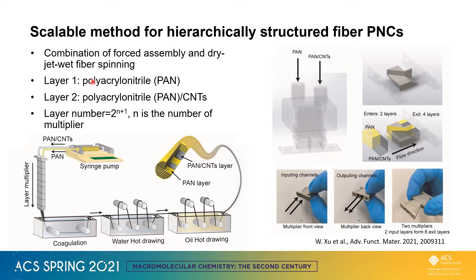We have two different types of material: layer 1 is polyacrylonitrile, and layer 2 is polyacrylonitrile carbon nanotube. As these two materials first entered the forced assembly process side by side, they were cut horizontally and rearranged vertically so that two layers entering would become four layers exiting. By adding more multipliers, the two layers would eventually turn out to be 512 layers, and as they exit the multiplier process into coagulation and drawing, we obtain this alternating layers fiber.